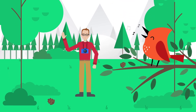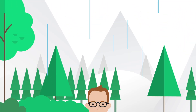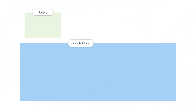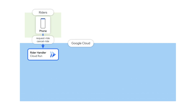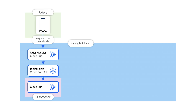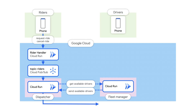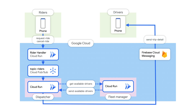Of course! When a rider requests a ride, the rider's mobile app sends an HTTP post to a Cloud Run service called Rider Handler. That service publishes a message to PubSub. The message is consumed by the Dispatcher service, which calls the Fleet Manager service to find nearby drivers. It then sends a push notification to the nearest driver via Firebase Cloud Messaging.